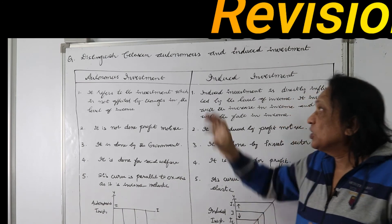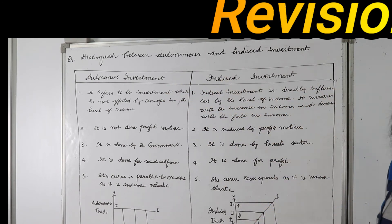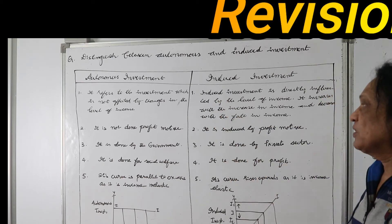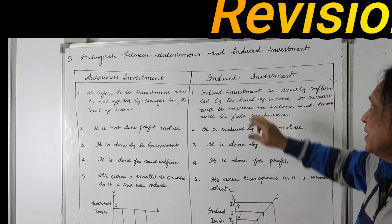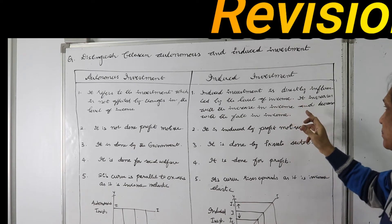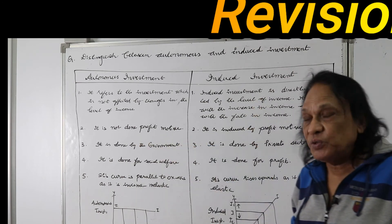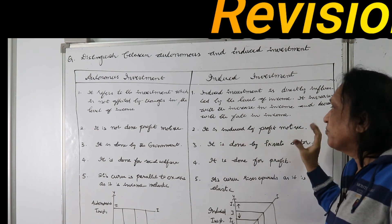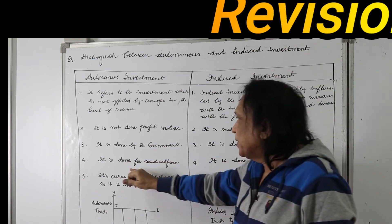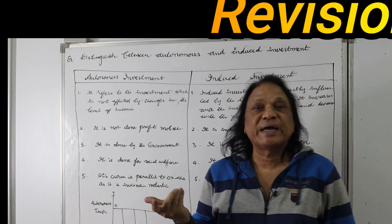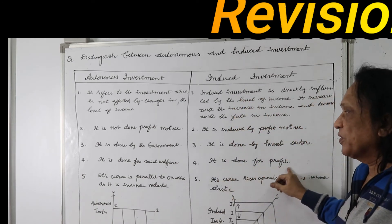Looking at the board: autonomous investment refers to investment which is not affected by changes in the level of income, whereas induced investment is directly influenced by the level of income — it increases with an increase in income and decreases with a fall in income. Autonomous investment is not done with the profit motive; induced investment is purely induced by profit motive. Autonomous investment is done by the general government; induced investment is done by the private sector.